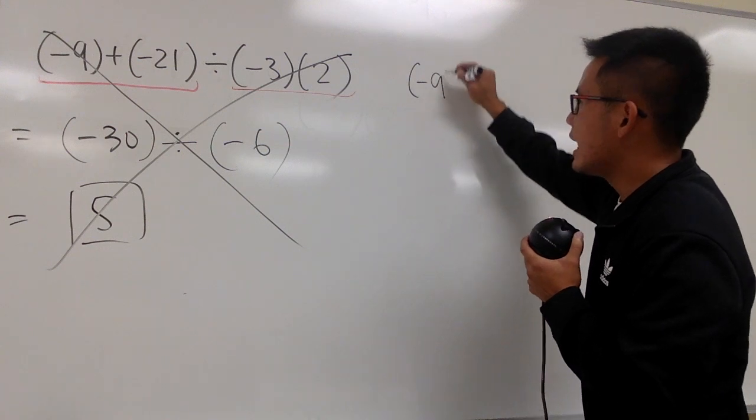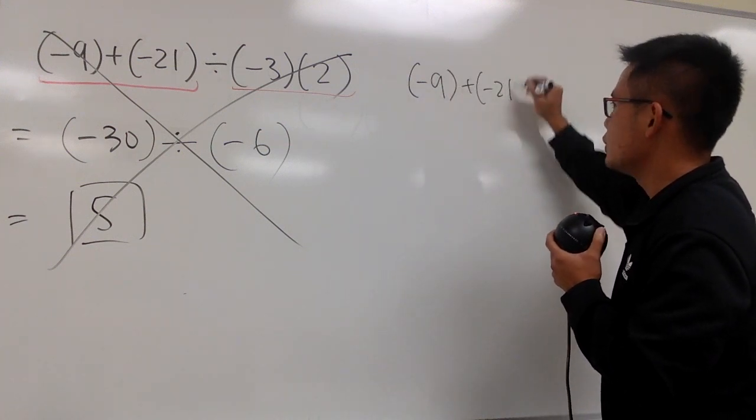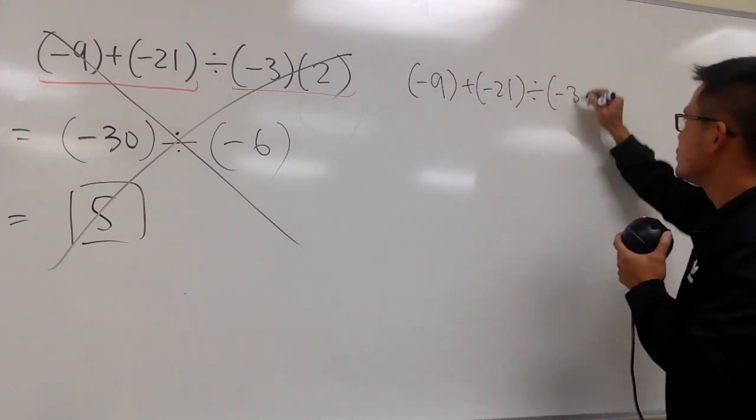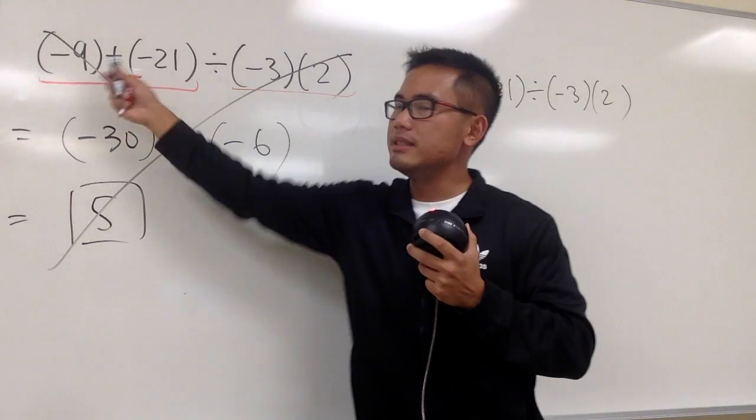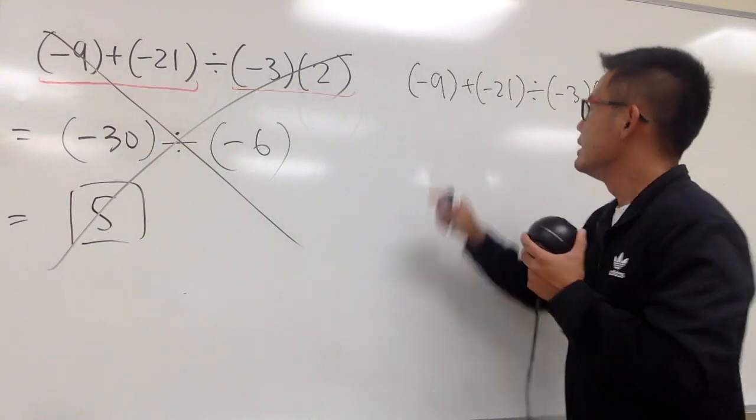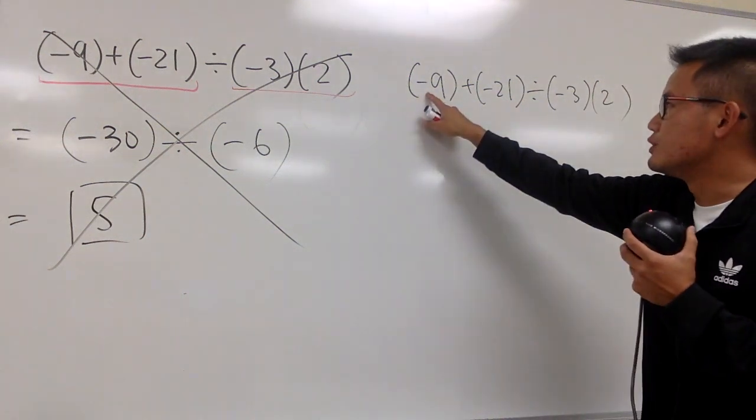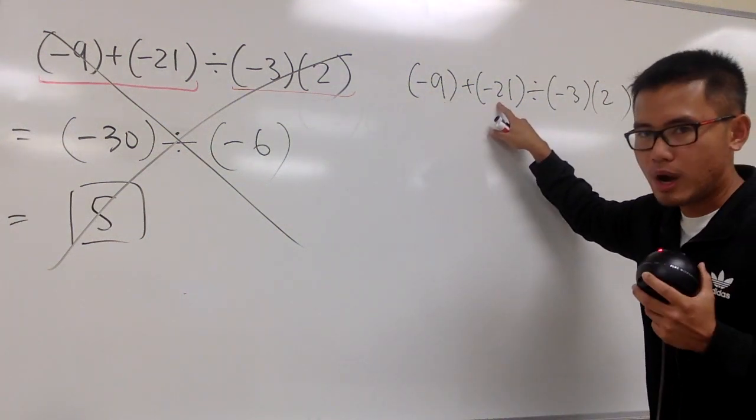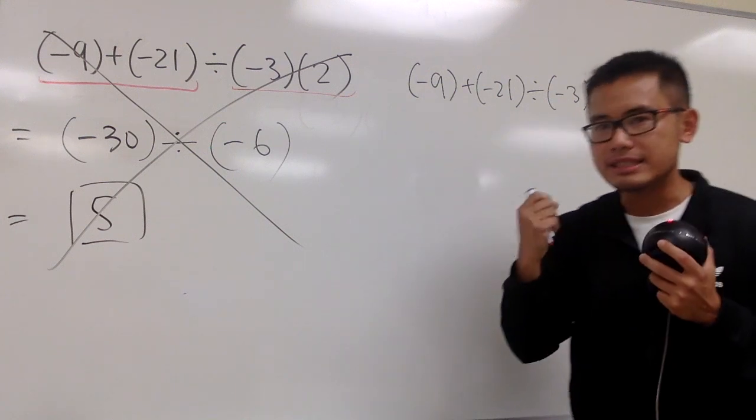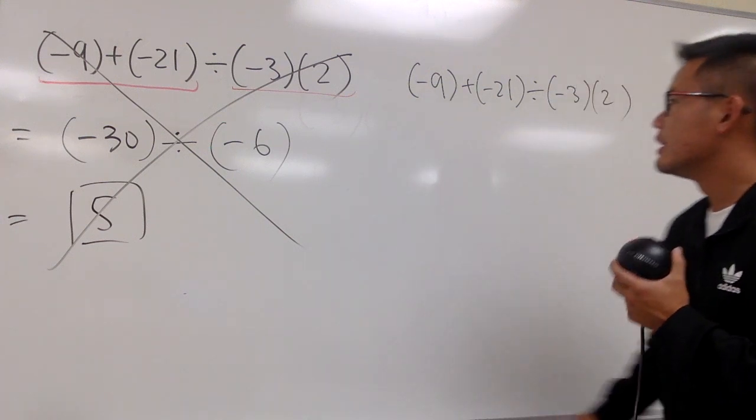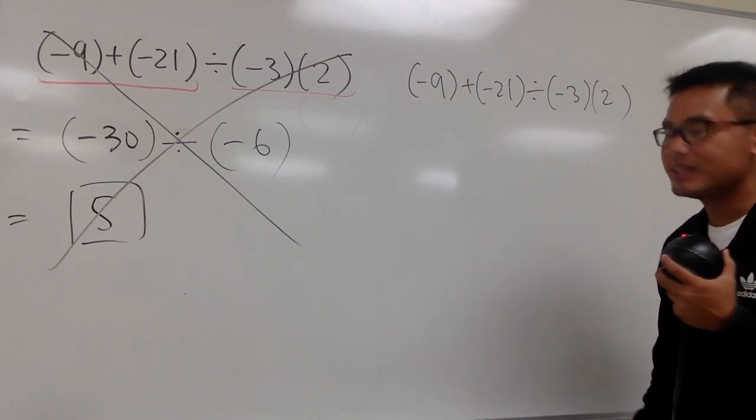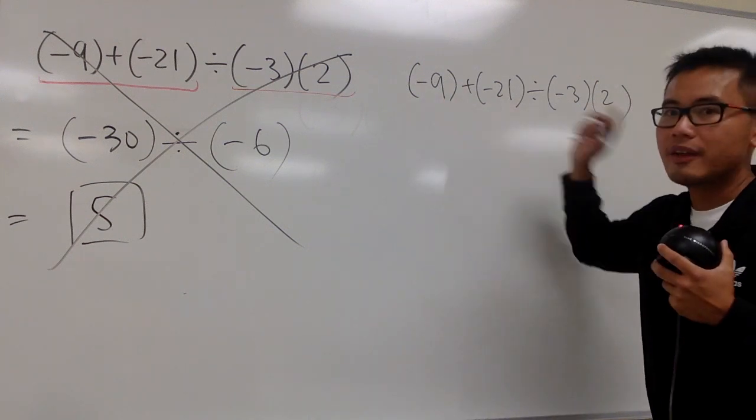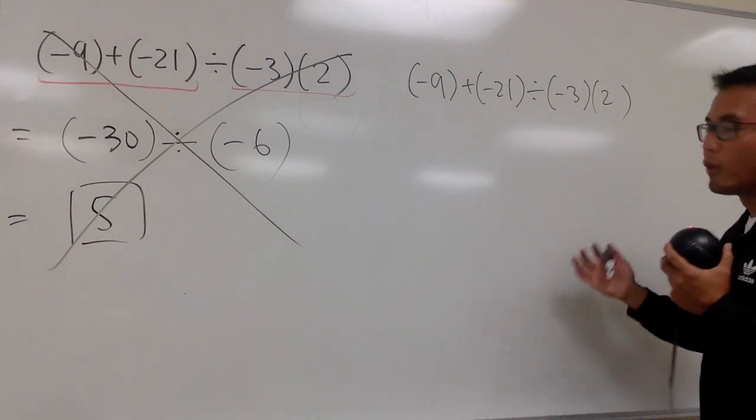This is the actual way to do it. Let me write down the question again. Negative 9 in the parentheses plus parentheses negative 21 inside, divided by negative 3, and then we have positive 2. Yes, we have the parentheses like this, but inside of the parentheses, this is just negative 9. This is just negative 21. There's no operations inside of the parentheses, right? You have to look for the operations inside of the parentheses to do first. If there's none, well, they are just numbers.